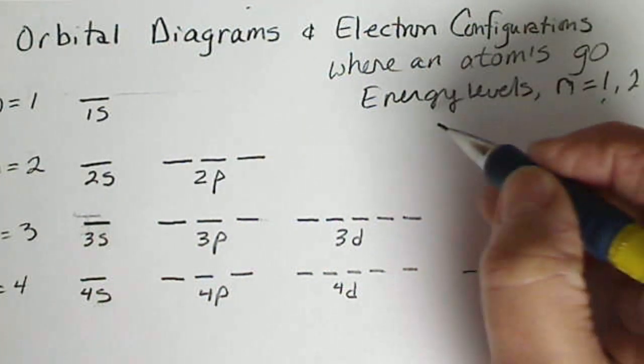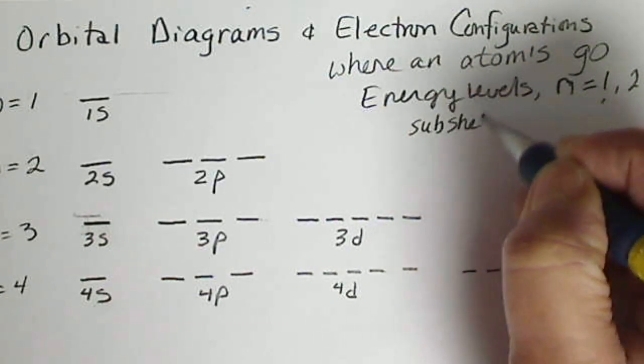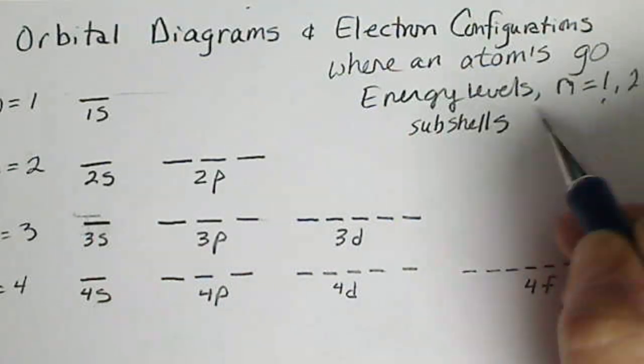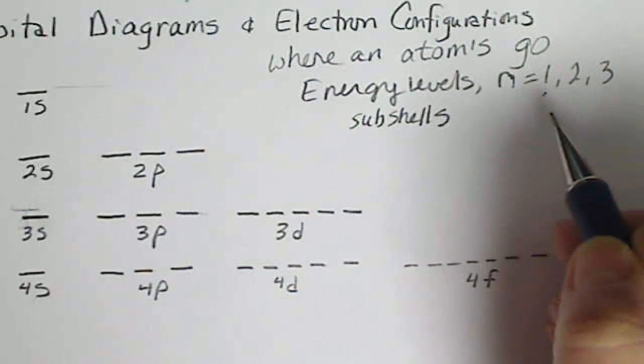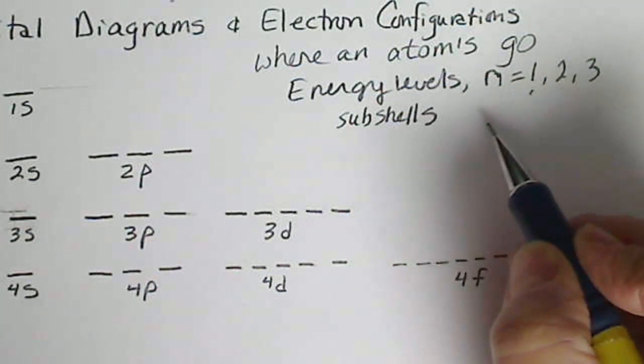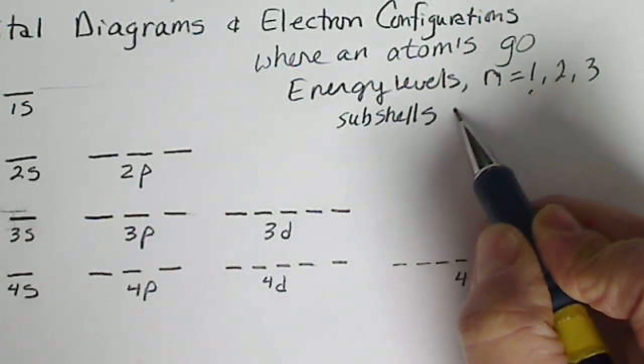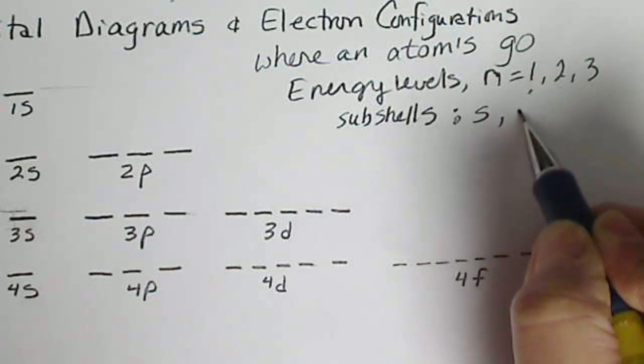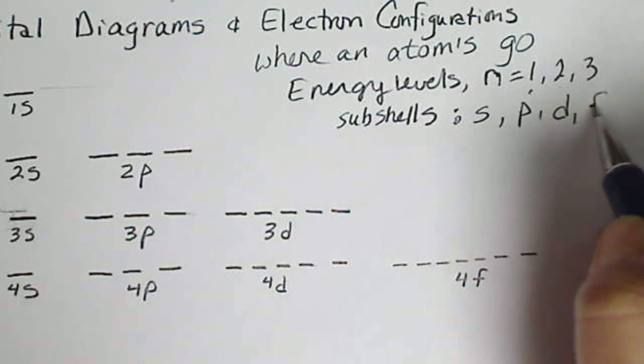Within an energy level we have sublevels or subshells, and those values depend on n. So the subshells describe shapes, and they're designated by letters. So we have an S, and then a P, and then D, and F.